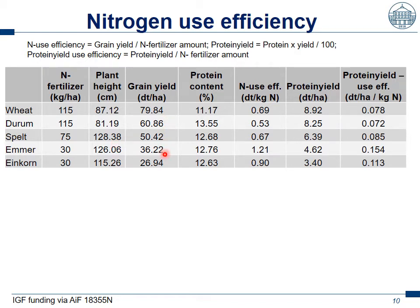For grain yield, we have already seen the differences with wheat being much better. Looking at protein content, we have a slightly different situation. Durum wheat has a by far higher protein content than bread wheat. Spelt, emmer, and einkorn have a similar level, higher than bread wheat. But here we must take into account that protein content is directly related to the amount of nitrogen fertilizer given. Looking at the high amount given to bread wheat and the low amounts given to spelt, emmer, and einkorn, it means clearly that spelt, and especially emmer and einkorn, have the potential to form a lot of protein.